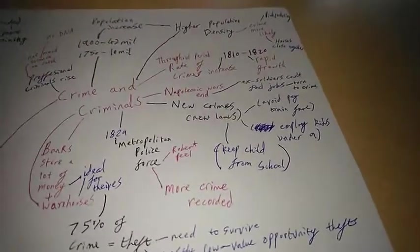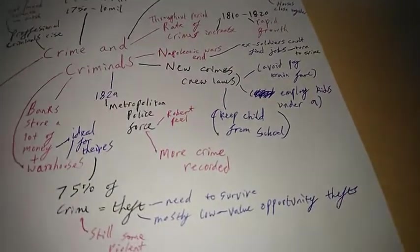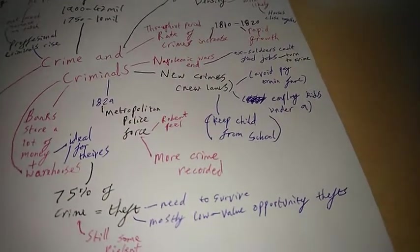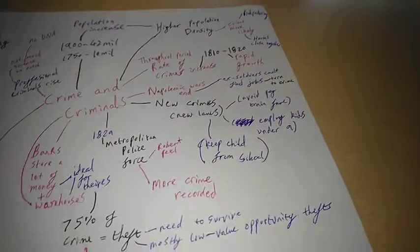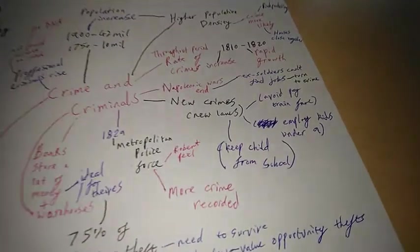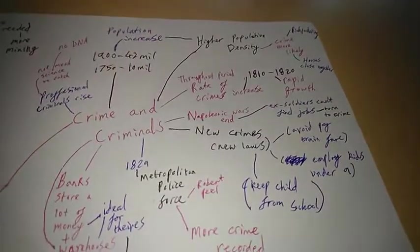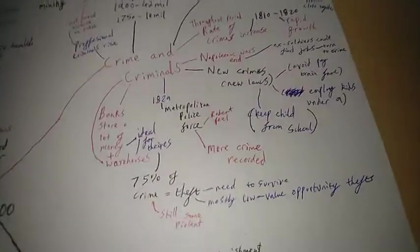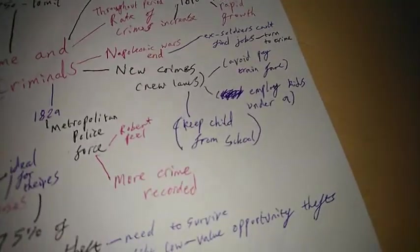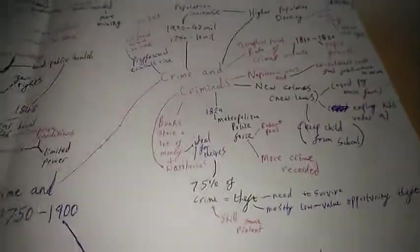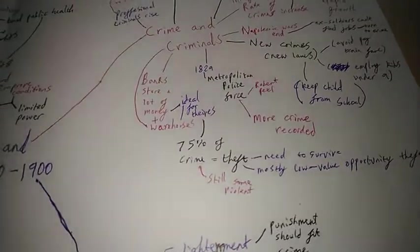Also new crimes due to new laws: avoiding paying a train fare, employing kids under nine, and keeping a child from school. These two, employing kids under nine and keeping a child from school, sort of about child welfare which was the enlightenment. They thought new ideas of how we should treat people. Also avoiding paying train fares because trains were only recently introduced, probably sometime in this time period.